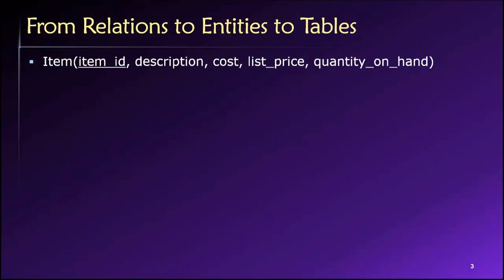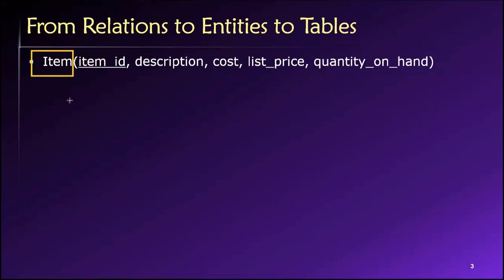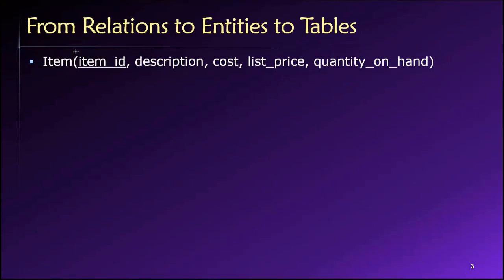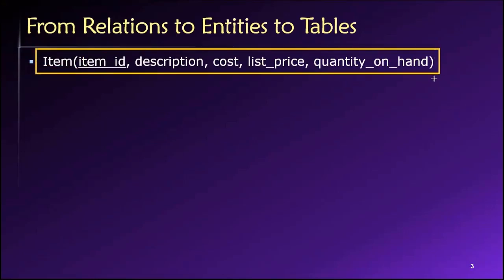We started off way back in topic number two by learning to create parenthetical relations. This was our first attempt at designing these data structures. The idea of describing a relation just using text, where we put the name of the relation and then inside parentheses, we list all of its attributes. We can underline one or more attributes to indicate a primary key, and if we have a foreign key, that attribute's name would be italicized in our parenthetical relations.